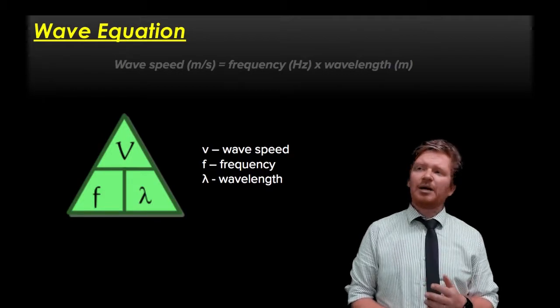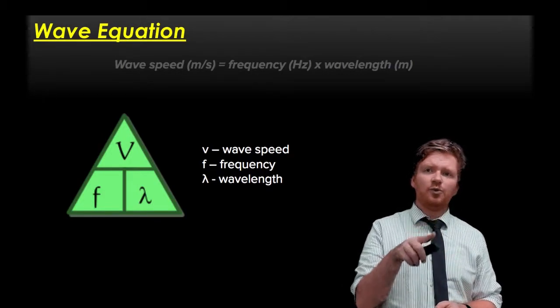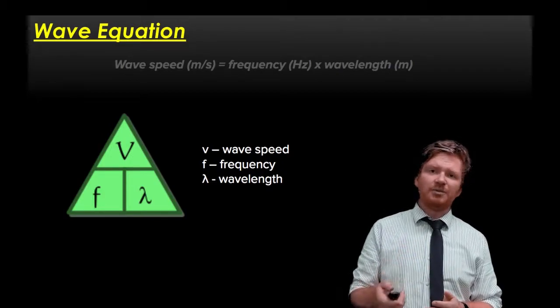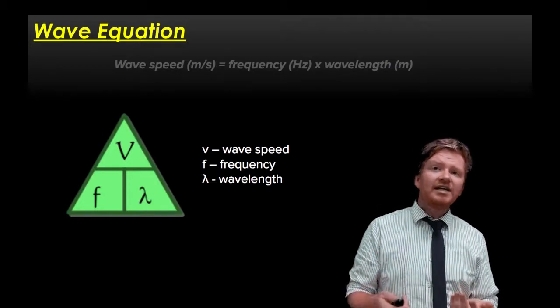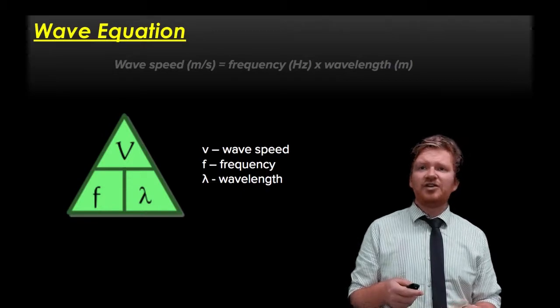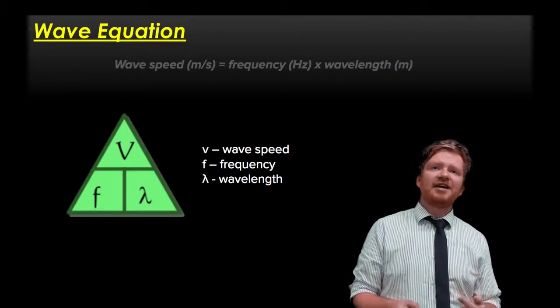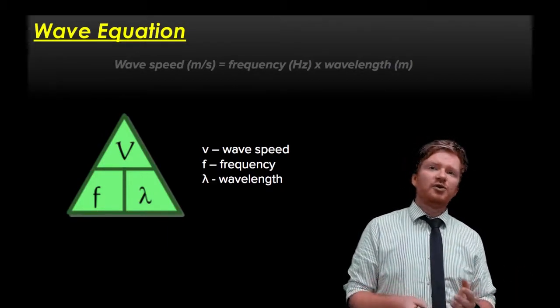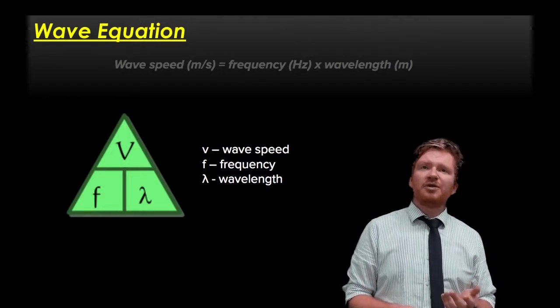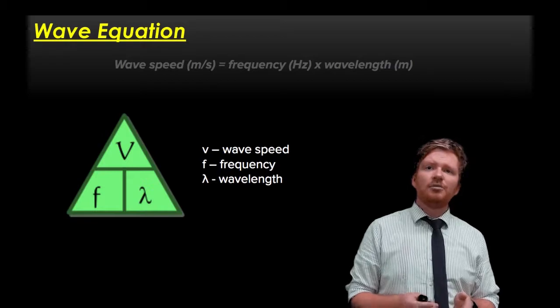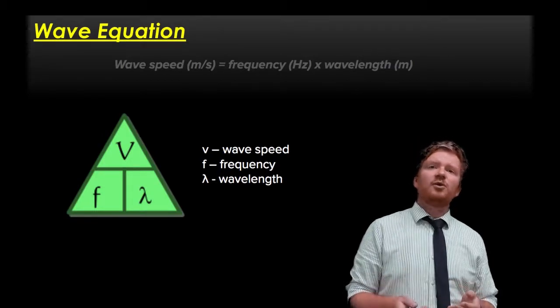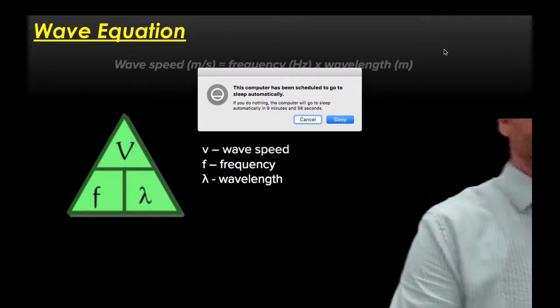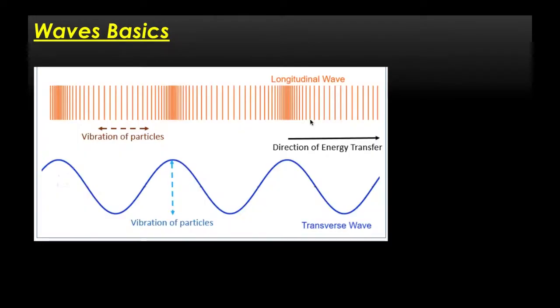One more little reminder: to find a frequency from the time period, we do 1 divided by the time period. So the time period, which we have capital T for, is the time taken for one complete wave in seconds. So the frequency is 1 divided by seconds, or per second. In physics, we can give the unit of hertz for frequency, but hertz means exactly the same as per second. Hertz and per second are interchangeable. So if you check the equation again, it makes sense - something in per second multiplied by something in metres gives us metres per second.